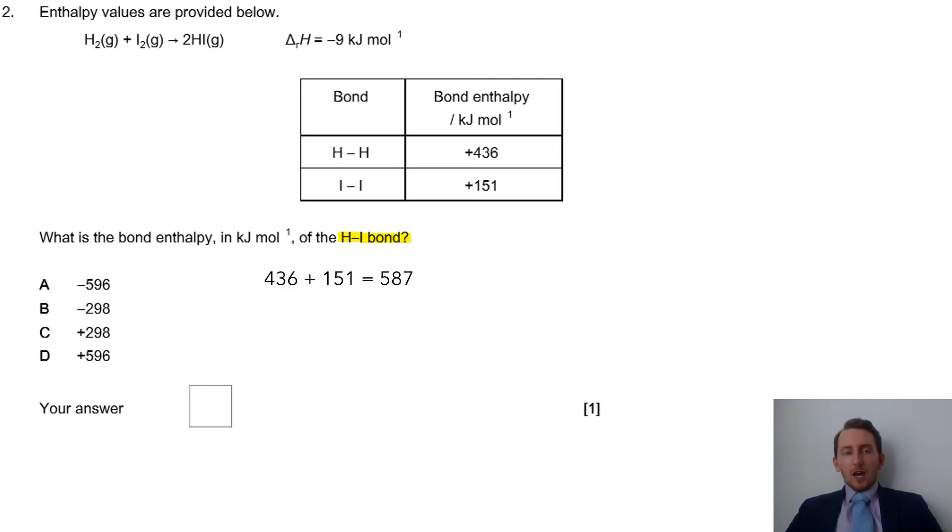So, if we have our reactants on our left-hand side, we have H2, which is a H to H bond, so that's 436, plus that I2 that's in there, so an I to I bond, 151. Add those together, we get 587. That's the first thing we've got to do. We can't do anything else, really, other than that.